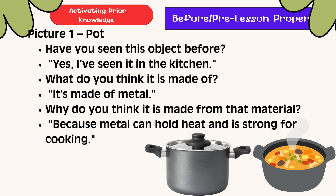Let's take a look at the pictures. For picture number 1, a pot. Have you seen this object before? Yes, I have seen it in the kitchen. What do you think it is made of? It is made of metal. Why do you think it is made from that material? Because metal can hold heat and is strong for cooking.